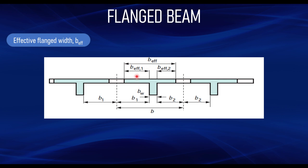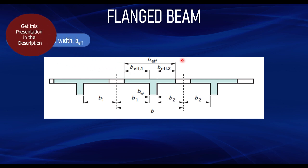For a T beam, you have BFF1 and BFF2. BFF1 and BFF2 are the parts of the slab attached to the beam on the left-hand side and right-hand side respectively. BW is the width of the web part of the beam — when talking about a flange beam you have the rib and the web. So the effective flange width of the beam equals BW plus BFF1 plus BFF2.